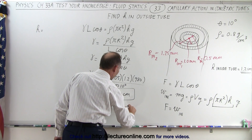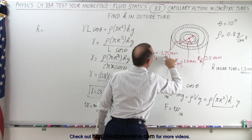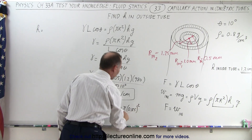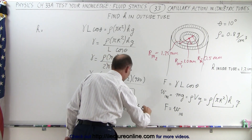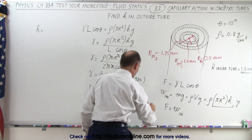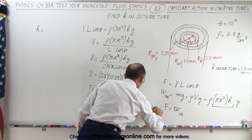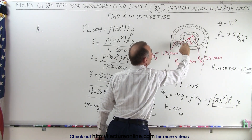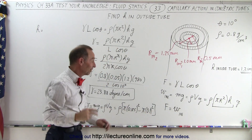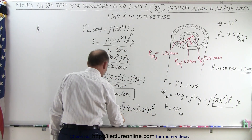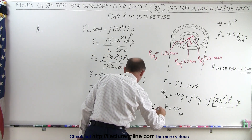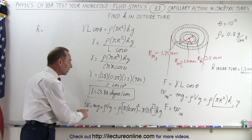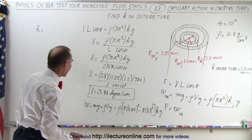The base area is pi times the outside radius squared — that is 0.125 centimeters squared — minus pi times the inside radius squared, which is 0.1 centimeters squared. This is the cross-sectional area of the liquid between the outside wall of the inner tube and the inside wall of the outer tube. So the weight is density times that area times height h times g.